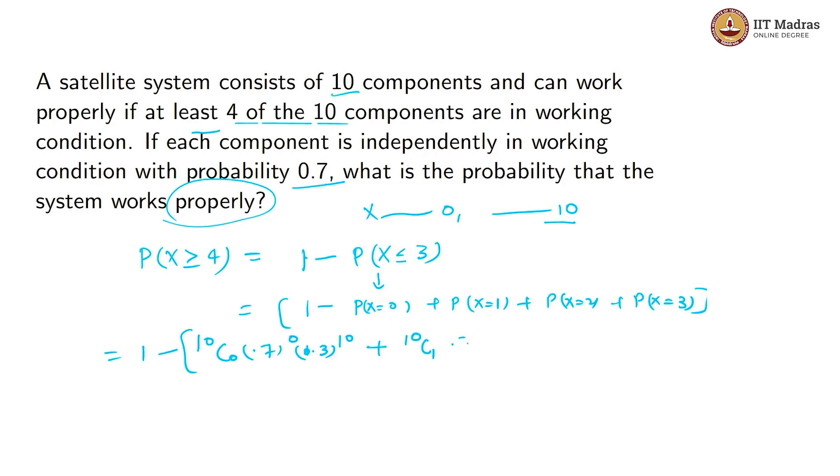Now P(X=1): 10C1 times 0.7^1 times 0.3^9. P(X=2): 10C2 times 0.7^2 times 0.3^8. Plus 10C3 times 0.7^3 times 0.3^7.